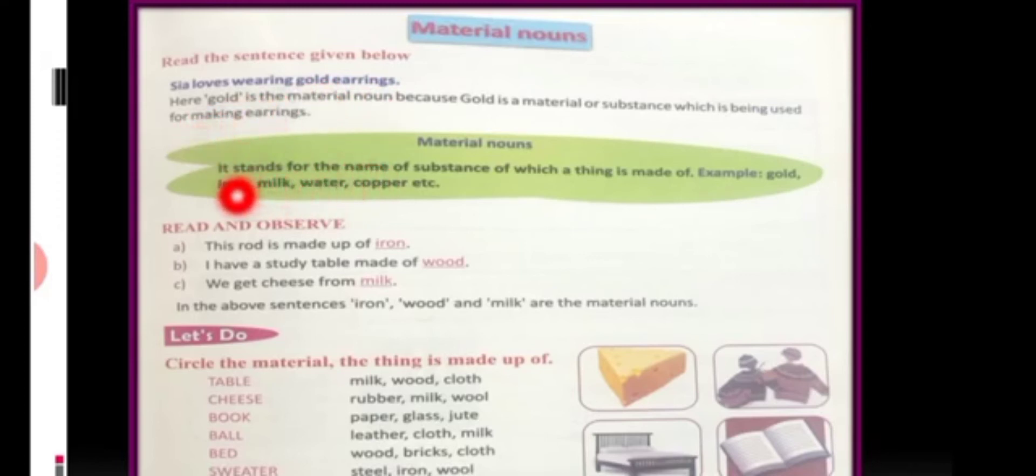Now, let's read about its meaning. Material noun stands for the name of a substance of which a thing is made of. For example, gold, iron, milk, water, copper, etc.